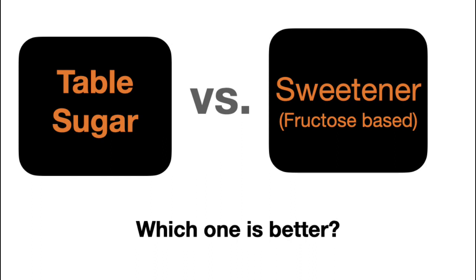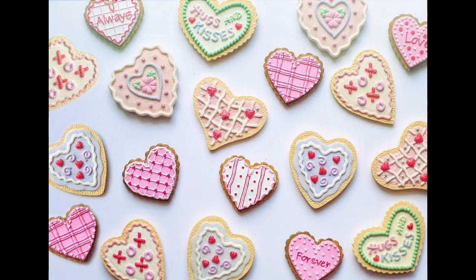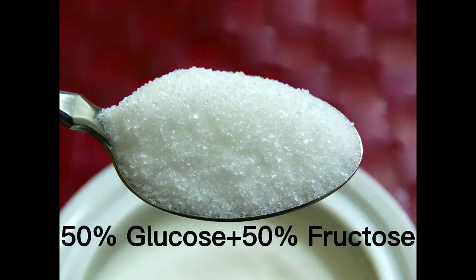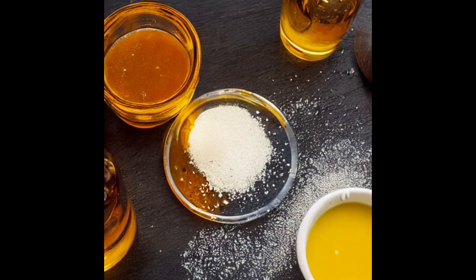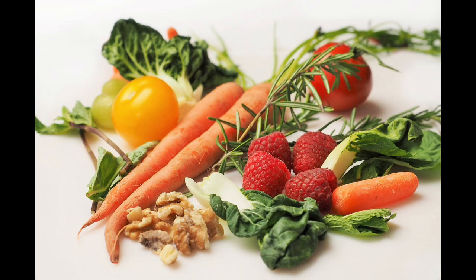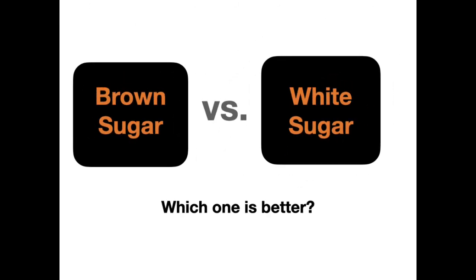Now I'll answer a few questions you may have about sugars. Question one: table sugar versus fructose-based sweeteners — which is better? Table sugar, also known as sucrose, is made from sugar cane or sugar beets and is made up of 50% glucose and 50% fructose. High fructose corn syrup is derived from corn and undergoes a chemical process to convert glucose in corn starch into fructose. Both can be part of a healthy diet in small amounts, but health experts recommend limiting intake of added sugars including both.